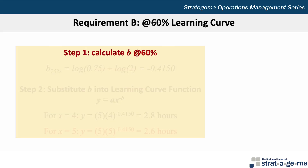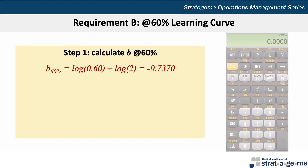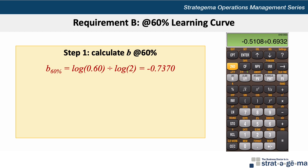For requirement B at a learning curve of 60%, the assumption is that the time to install the fourth copier is 60% of the time to install the second copier. This means the technician is learning at a rate faster than in requirement A. Step 1 is to calculate b as log 0.60 divided by log 2, which is negative 0.7370. That value is stored in memory block 2.